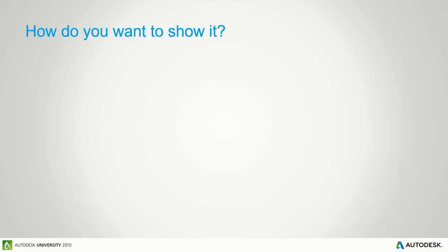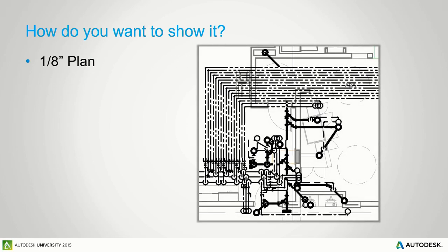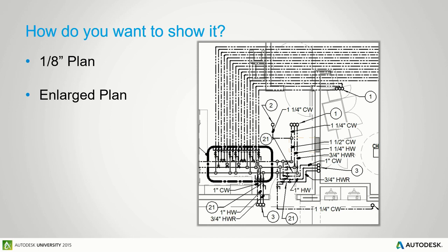Here's an example: initially we want to stick with the eighth-inch plan to keep it consistent with the rest of the construction documents, but this is what Revit actually looks like when you lay things out in confined spaces. You don't take into account the third dimension in 2D — everything lays on top of each other and is not clearly defined. It's just a giant mess.